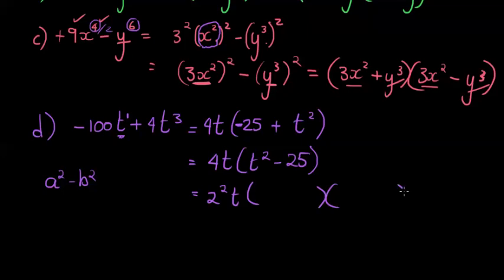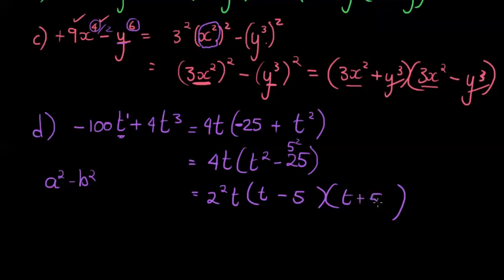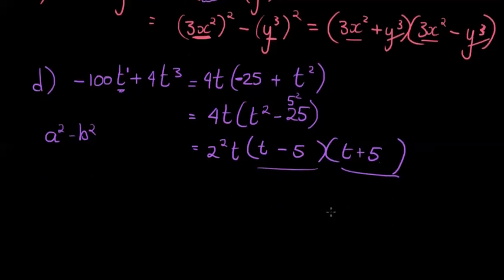We get t with half the exponent — just as x to the power of 4 gave x squared, and y to the power of 6 gave y cubed. Now 25 is 5 squared, so the brackets become t minus 5 and t plus 5. Note that I swapped the brackets around — it doesn't matter whether it's t minus 5 times t plus 5 or the other way around, the order is completely unimportant. And there we go — fully factorized. Nothing else here can be written as factors any further. I hope you enjoyed it — I'll see you in the next lesson.